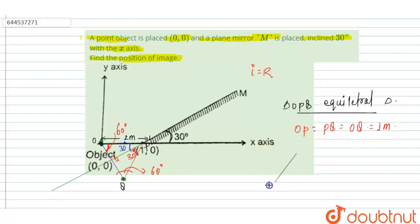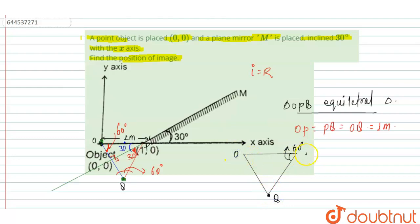That means the situation is like this: the three sides form the triangle with angles of 60 degrees each. This point is Q, this is O, and this is P. We have to find the coordinate of Q. Given that all sides equal 1 meter, we draw a perpendicular line from Q down to the x-axis. Let us call this point S.